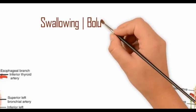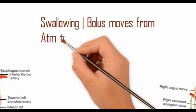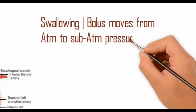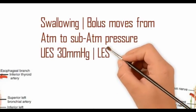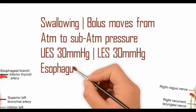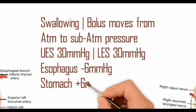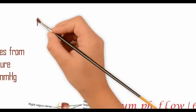The pressure in the esophagus is sub-atmospheric at minus 6 mmHg, whereas in the stomach it is positive at plus 6 mmHg. The pressure in the upper and lower esophageal sphincters is roughly 30 mmHg. During swallowing, the bolus of food passes from atmospheric pressure, gets sucked into the esophagus, and then passes from the esophagus to the stomach over a pressure gradient of 12 mmHg.